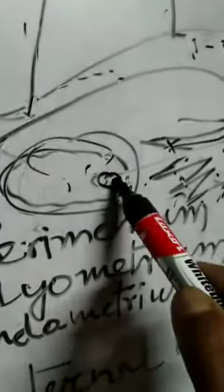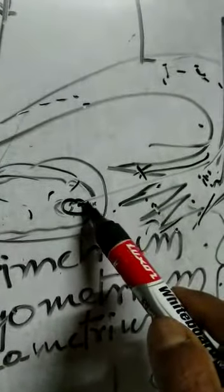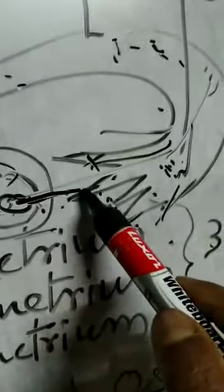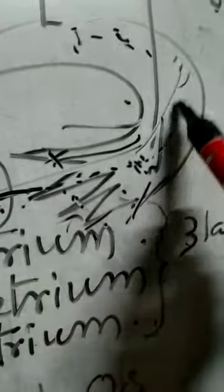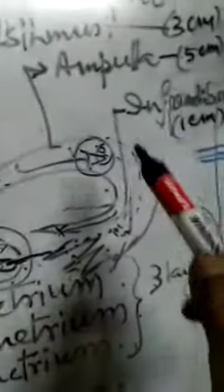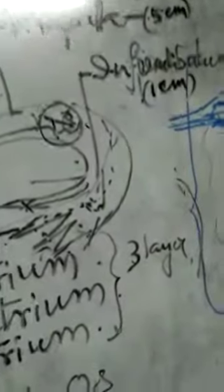This one is the ovary. After ovulation, the Graafian follicle undergoes rupture and the ovum passes out from the ovary and enters into the ampullary part of the uterine tube, where the sperm penetrates the ovum — that is known as fertilization. So fertilization takes place in the ampullary part of the uterine tube.